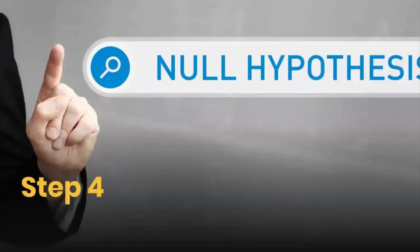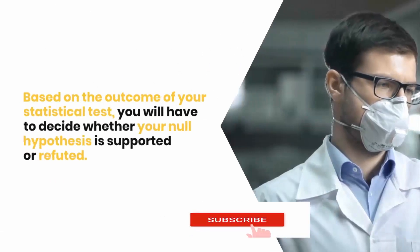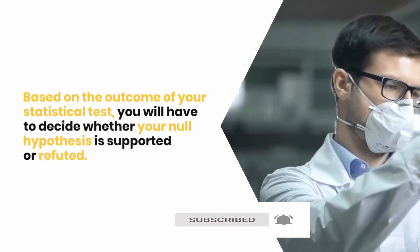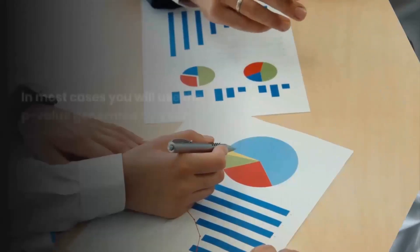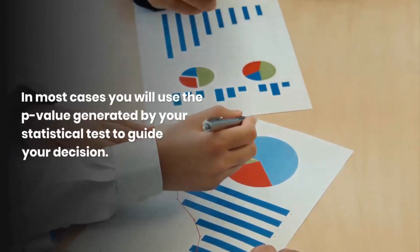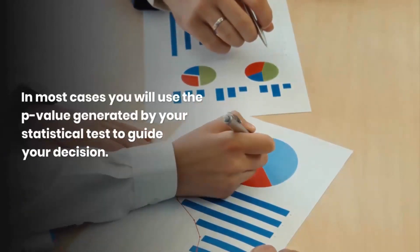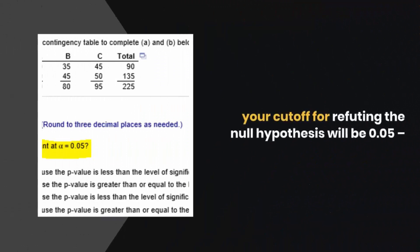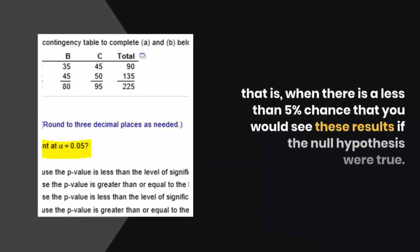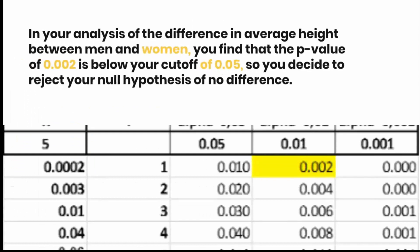Step 4: Decide whether the null hypothesis is supported or refuted. Based on the outcome of your statistical test, you will have to decide whether your null hypothesis is supported or refuted. In most cases you will use the p-value generated by your statistical test to guide your decision. And in most cases, your cutoff for refuting the null hypothesis will be 0.05, that is, when there is a less than 5% chance that you would see these results if the null hypothesis were true. In your analysis of the difference in average height between men and women, you find that the p-value of 0.002 is below your cutoff of 0.05, so you decide to reject your null hypothesis of no difference.